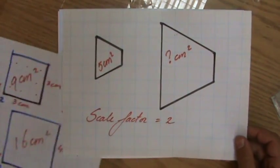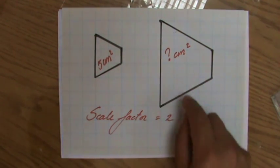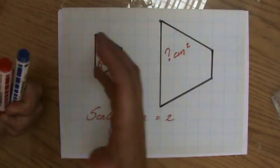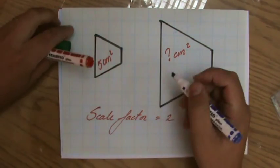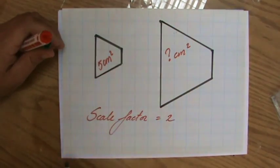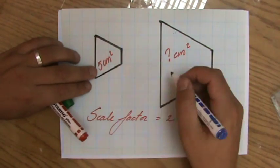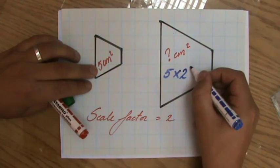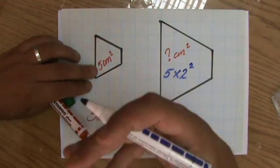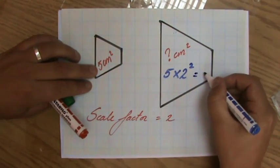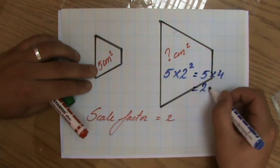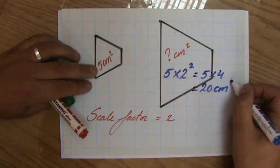Back to this question. If the scale factor is 2, what is the area of the bigger trapezium? Do I just do 4 times 2? No, I don't. I do, it's not 4, 5 times 2. No, I don't. I do the area of the smaller one times the scale factor squared, because we're talking about area. So that is going to be 5 times 4, or the area is going to be 20 centimeters squared.